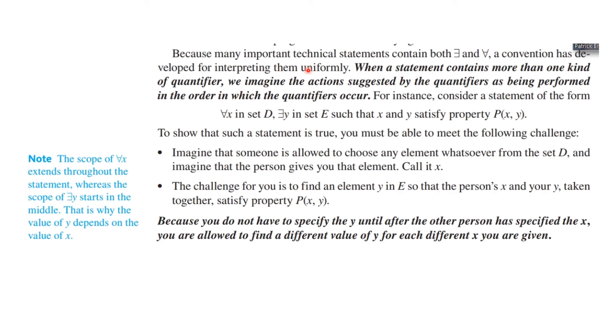Because many important technical statements contain both there exists and for every, a convention has been developed for interpreting them uniformly. When a statement contains more than one kind of quantifier, we imagine the actions suggested by the quantifiers are being performed in the order in which the quantifiers occur, that is from left to right except when parentheses say otherwise.